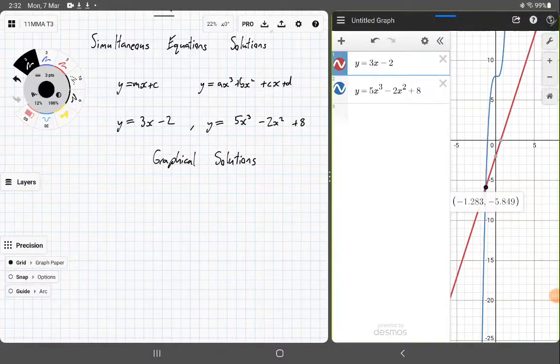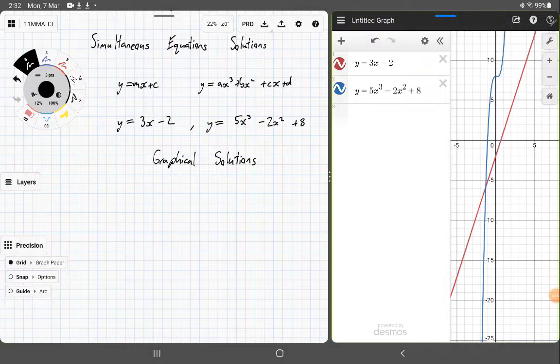And that point is at negative 1.283, negative 5.849. And that would be an example of a graphical solution to the problem. So there's only one solution.